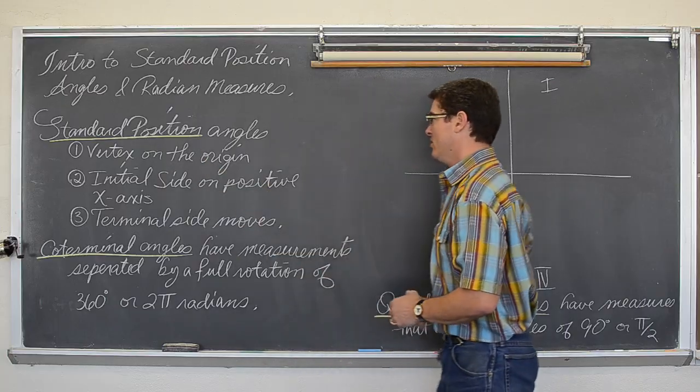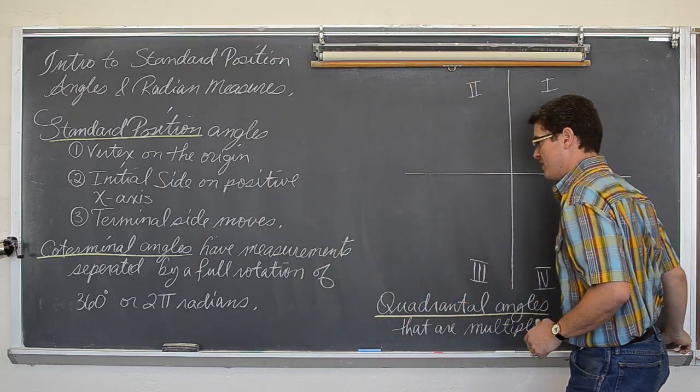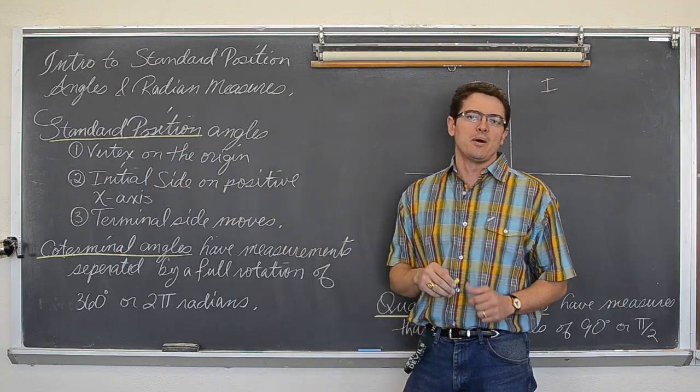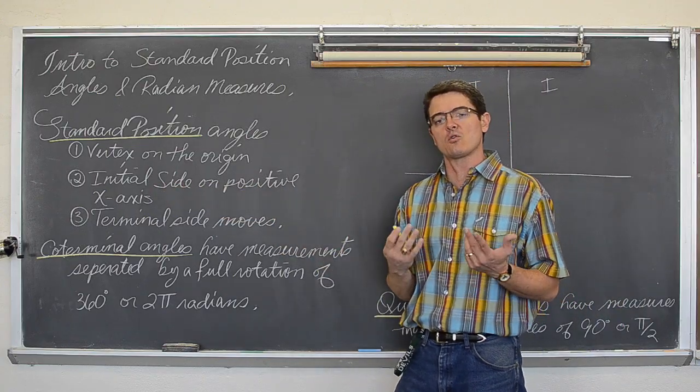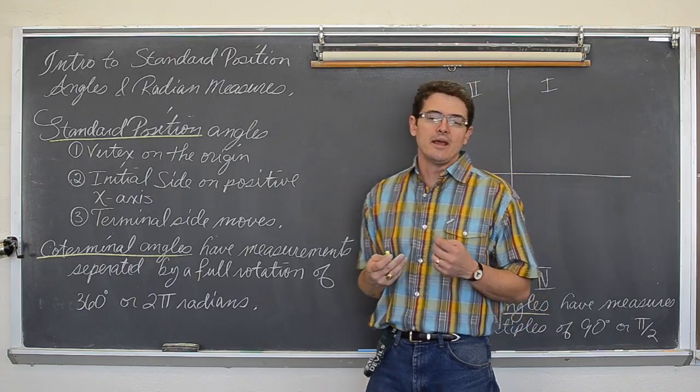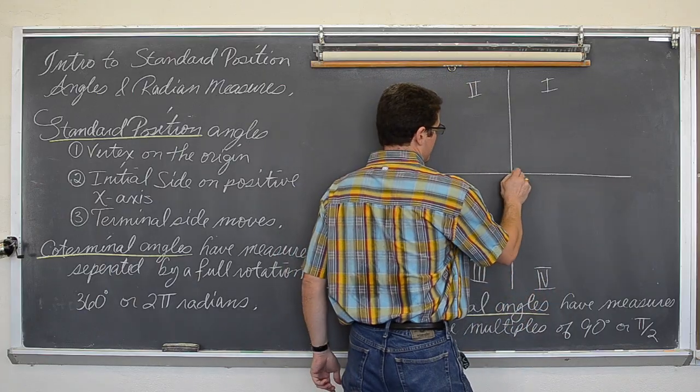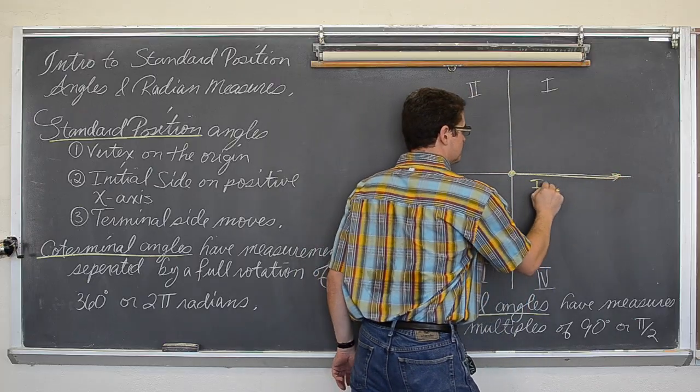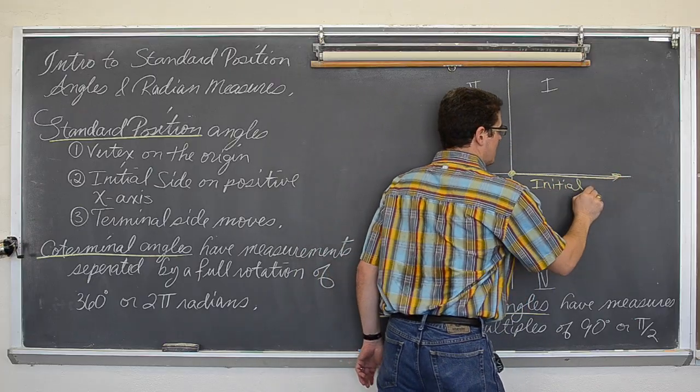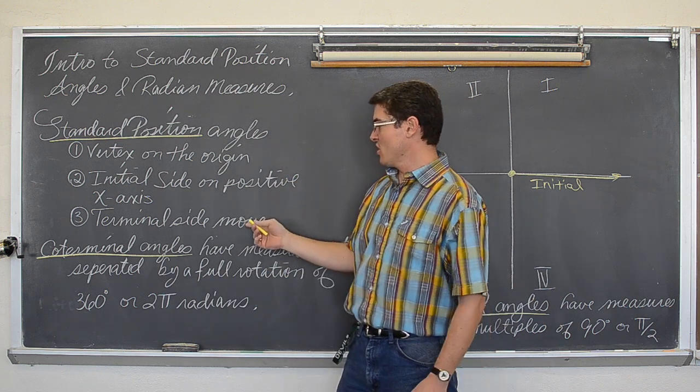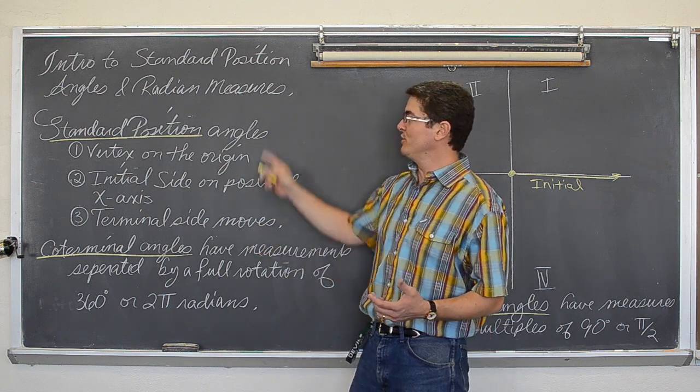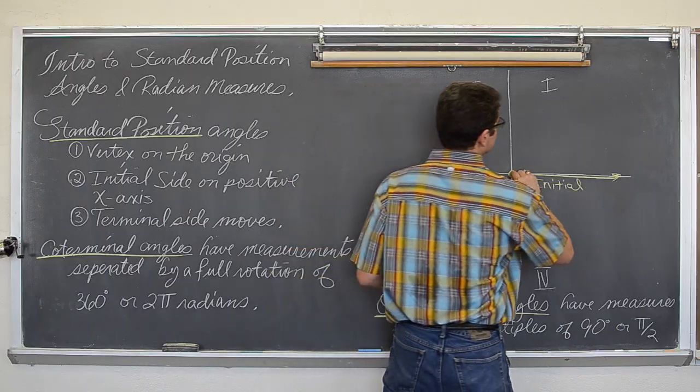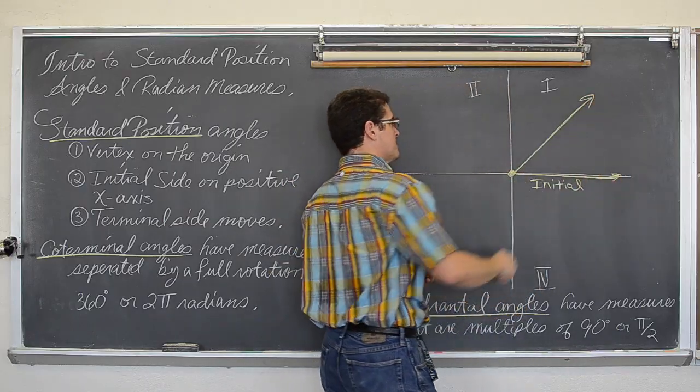A standard position angle has a vertex on the origin and its initial side on the positive x axis. So if I wanted to start drawing a standard position angle, I would start off by putting the vertex on the origin and the initial side on the positive x axis. Now the terminal side is the only part that is allowed to move. So let's draw a 45 degree angle. This is the terminal side.